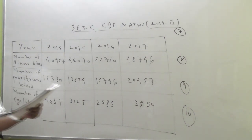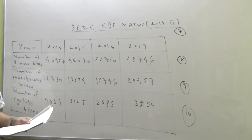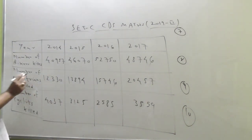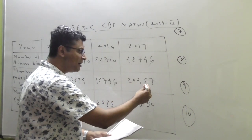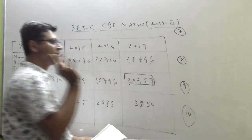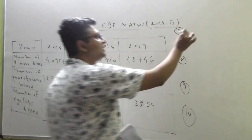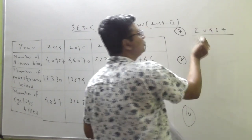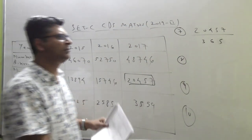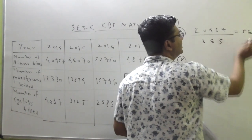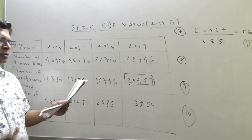The first part asks: what was the average number of pedestrians killed per day in 2017? Search the pedestrian row. In 2017, the value is 20,457. To find the average per day, divide 20,457 by 365. This gives approximately 56, which is in option D. The calculation gives a value near about that — it won't be exact.